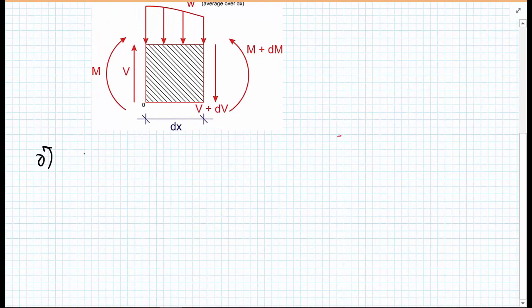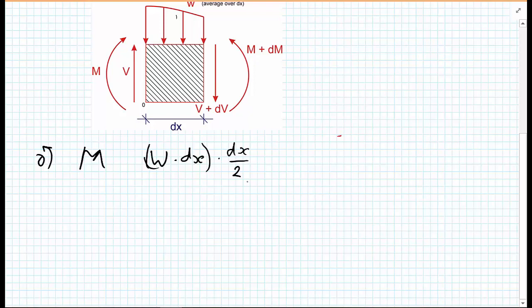On the left-hand side, we have M. The next term, we have W, this load going across the top. To get this from a load intensity to a force, we're going to have to multiply by the width dx. Then the lever arm to where the centroid of this load is, is dx upon 2.